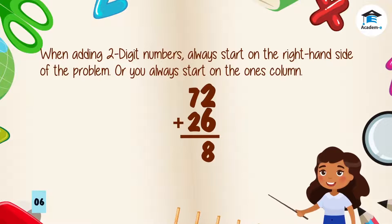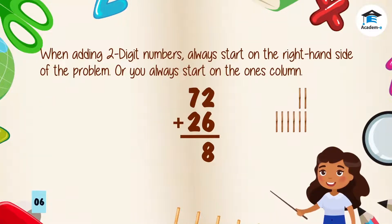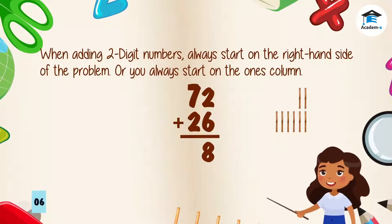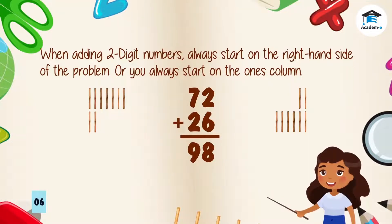Two plus six is equal to eight. Let's count the sticks: we have two sticks and six sticks — one, two, three, four, five, six, seven, eight. Our answer is eight. Next, add the left side — the tens column: seven plus two is equal to nine. Counting the sticks: one, two, three, four, five, six, seven, eight, nine. The sum of 72 and 26 is 98.